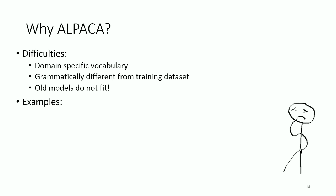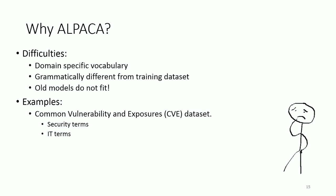An example would be security reports in a common vulnerability and exposure dataset that have a high proportion of technical IDs and security-related terms. Another example would be text from user reviews in mobile app stores, which are often in a grammatical mess and words can sometimes have different meanings in different contexts.